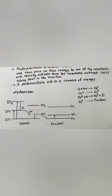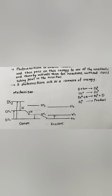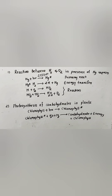That radiated energy is once again absorbed by the acceptor or reactant molecules. Simply put, the transfer of energy takes place by the collision of the donor molecule with the reacting molecule. Once the reactant molecule absorbs that radiated energy, it gets excited to the triplet state and later dissociates to form the product molecule.